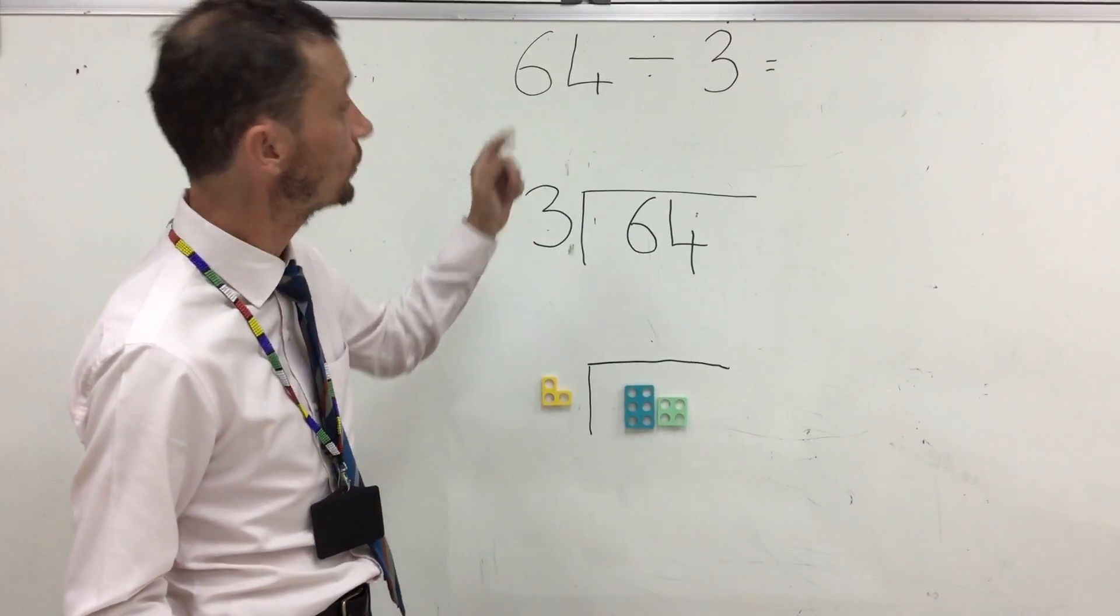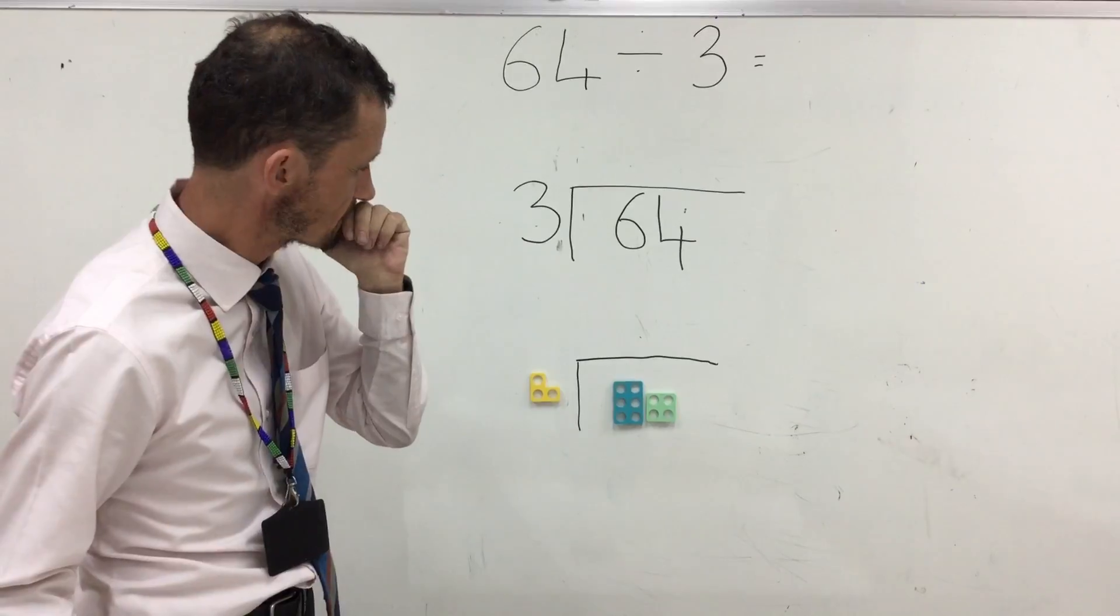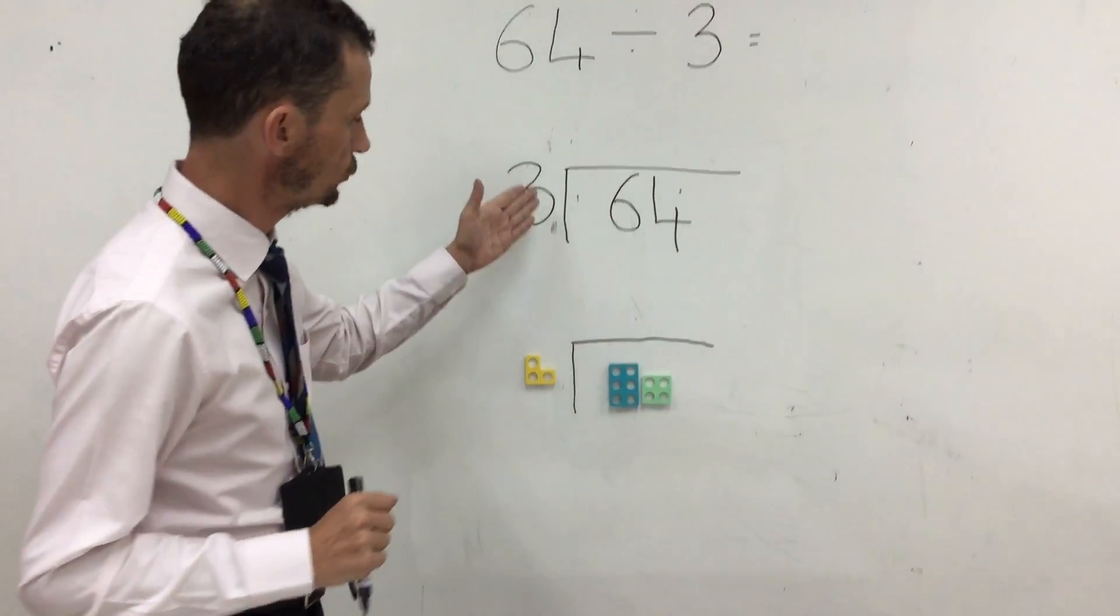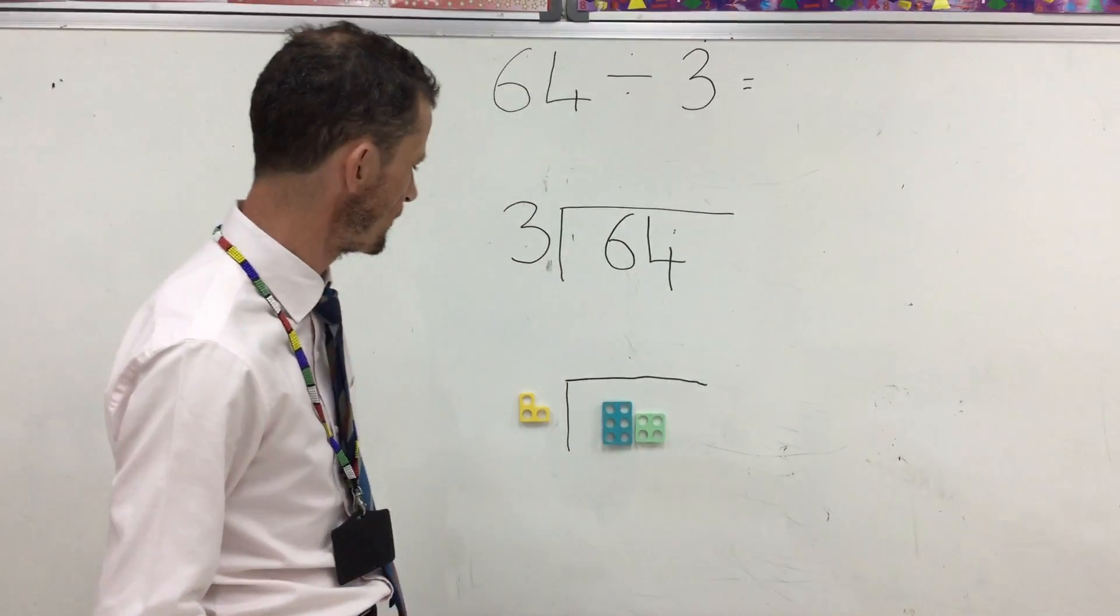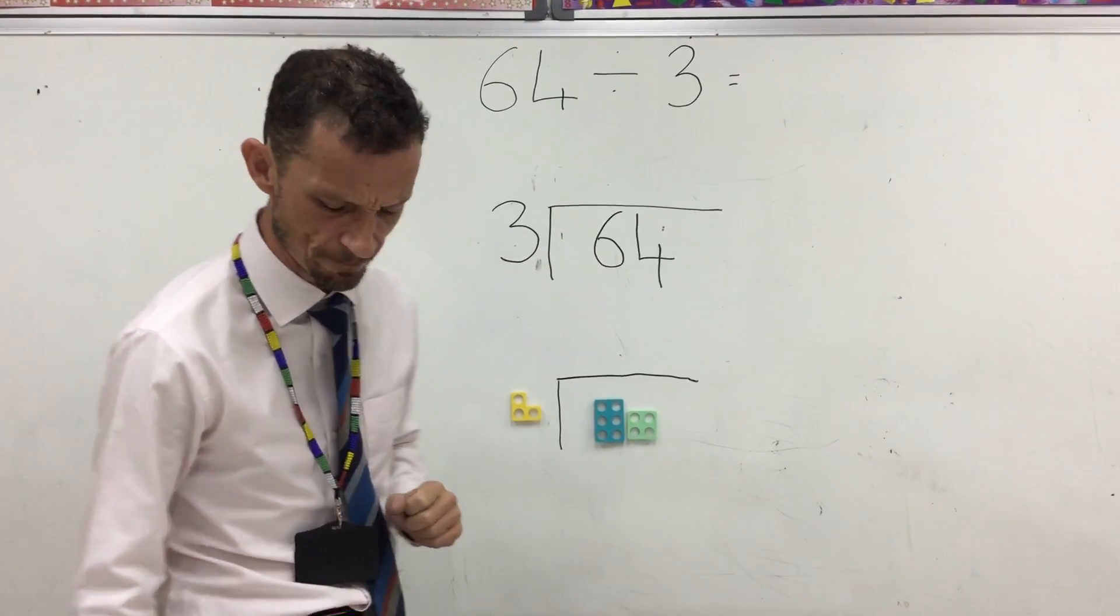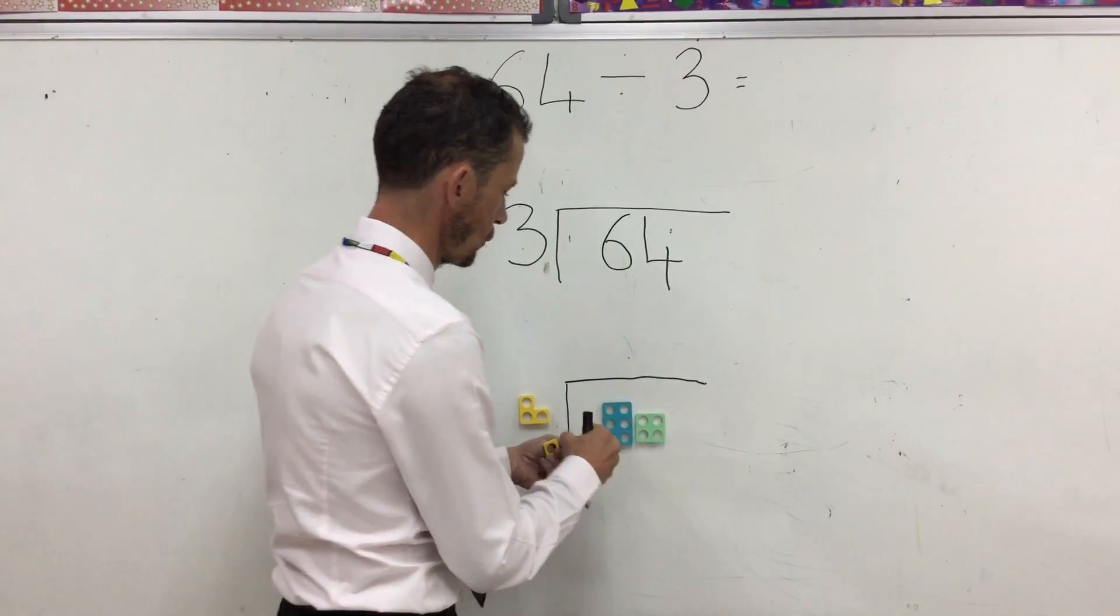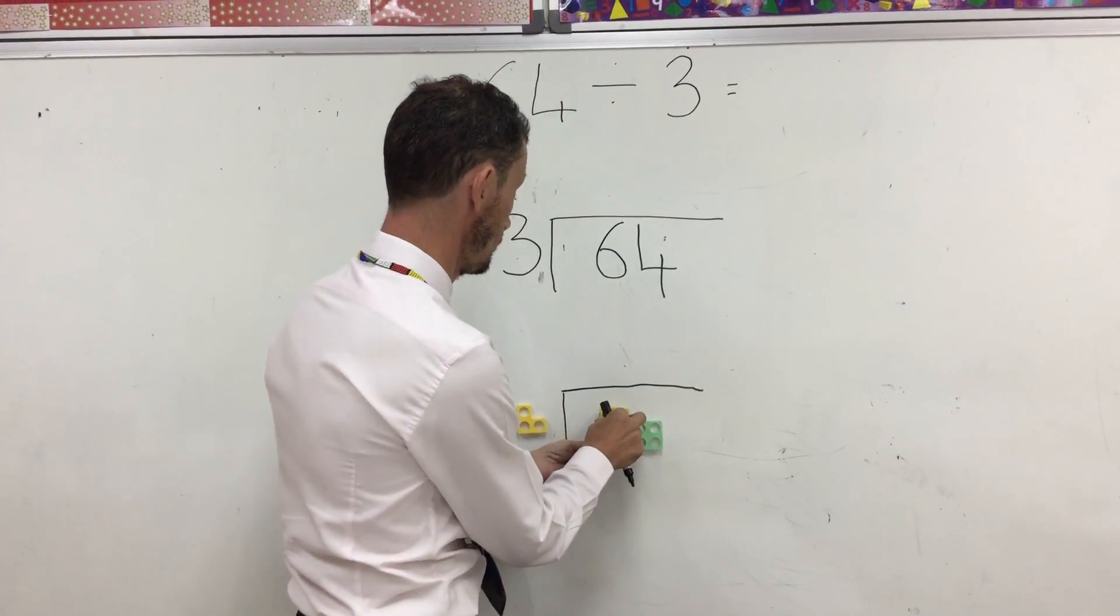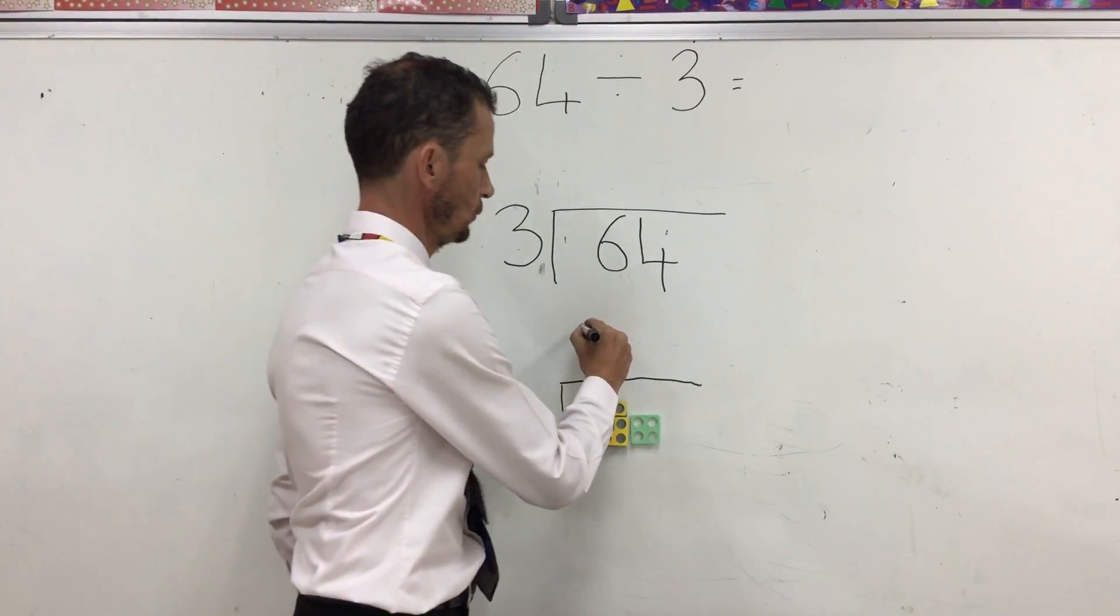First of all, we're going to do 64 divided by 3. Okay, so you've put your biggest number in the bus stop, and you've put your smallest number just outside the bus stop. First of all, 3 into 6. I wonder how many 3s go into 6. Let's find out. One 3, two 3s. 2.